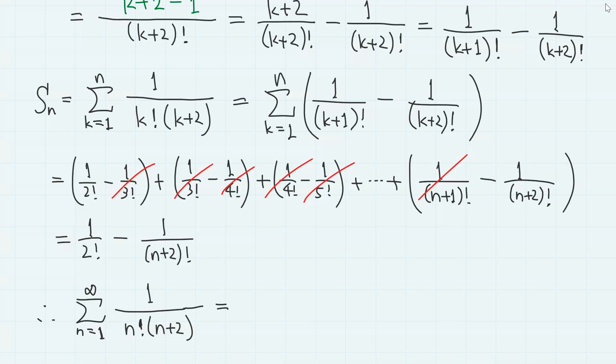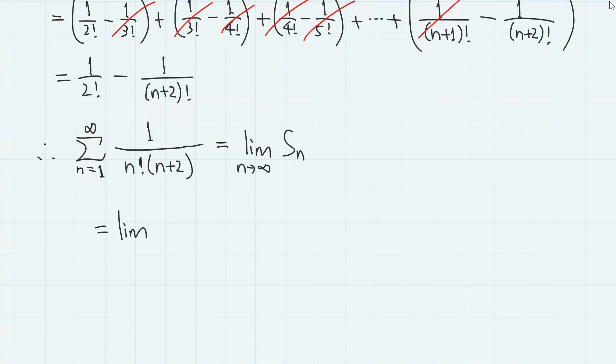Therefore, the sum of this series is the limit of the partial sum. So limit of 1 over 2 factorial minus 1 over n plus 2 factorial as n goes to infinity. And this part goes to 0. So we simply have 1 half.